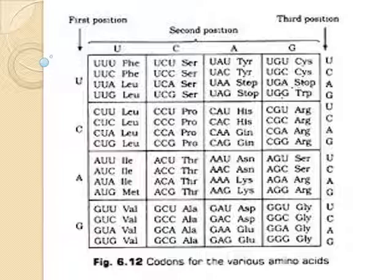Let's see the features of genetic code. It is a triplet. Out of 64 codons, 61 codons code for amino acids and three codons do not code for any amino acids. Hence they function as stop codons. They are UAA, UAG, and UGA.